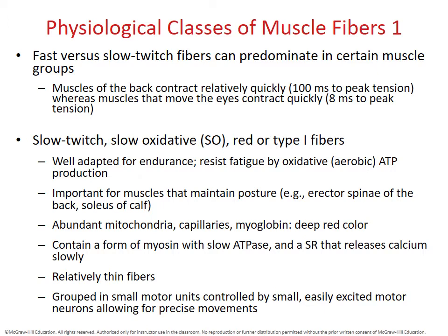On the other hand, the dark meat — thigh and drumstick — are slow oxidative or red fibers. If you chase a chicken that chooses to run, it can go seemingly forever because those leg muscles are slow twitch oxidative fibers, better suited for long-term but less powerful contractions. Fast glycolytic fibers are good for short-term powerful contractions but fatigue quickly; slow oxidative fibers are good for endurance and resist fatigue.